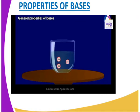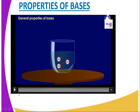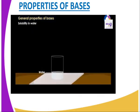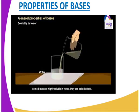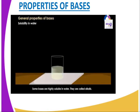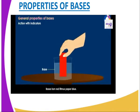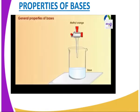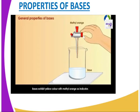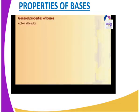What are some of the properties of bases? Let us look at the following illustration to understand some of the properties of bases. Starting with solubility: not all hydroxides dissolve in water. Some dissolve, while some do not dissolve. The bases that dissolve are called alkalis. Under the influence of indicators, they turn litmus blue, and methyl orange turns orange.